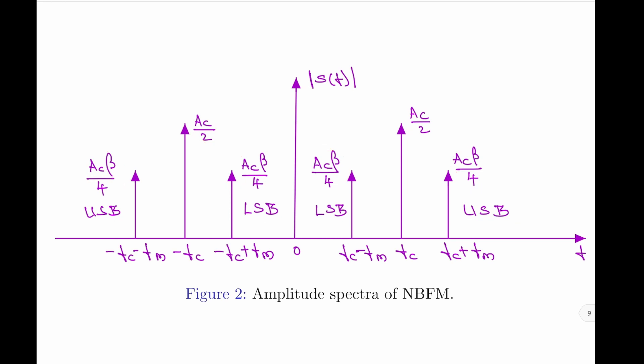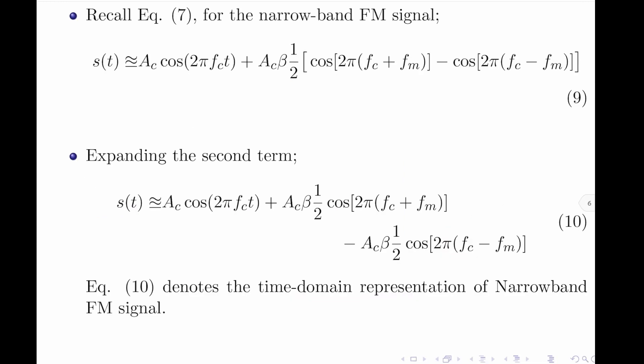Let us list observations from the amplitude spectra of the narrow band frequency modulated signal. The first observation is that the amplitude spectrum for NBFM shows impulses at ±fc, indicating a carrier term is present and not suppressed. The proof is seen in the first term of the time-domain NBFM equation, which is the carrier itself — so in narrow band FM the carrier is not suppressed.